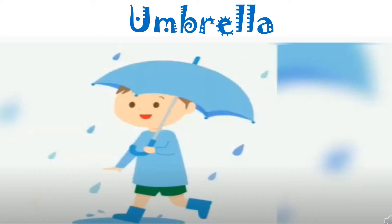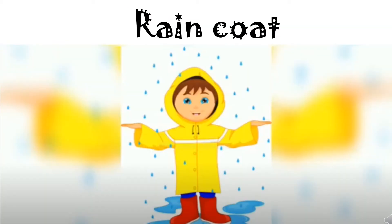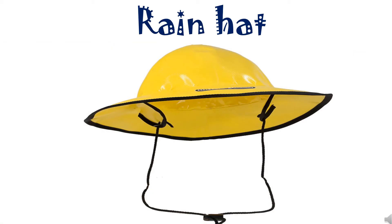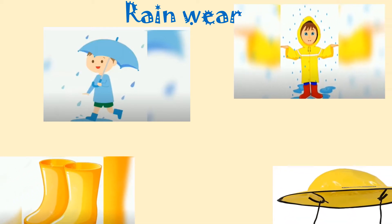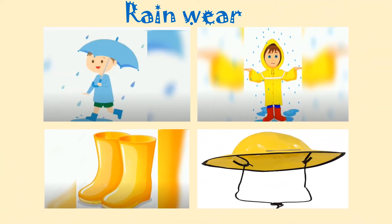Some of the rainwear that we use during rainy season are umbrella, raincoat, rain hat and gumboots. So dear kids, to protect us from rain, we use rainwear like umbrella, raincoat, gumboots and rain hat.